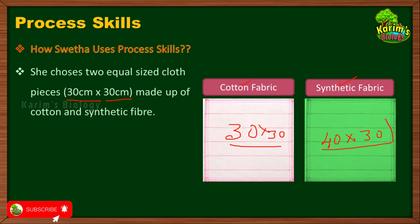When there is a difference in size, she will not get an accurate result. So in order to get an accurate result, she must make sure that both cotton fabric and synthetic fabric have the same length and breadth. If there is any difference, the result will be wrong, the interpretation will be wrong, and the entire experiment will be a failure. This is the first variable she has to control.